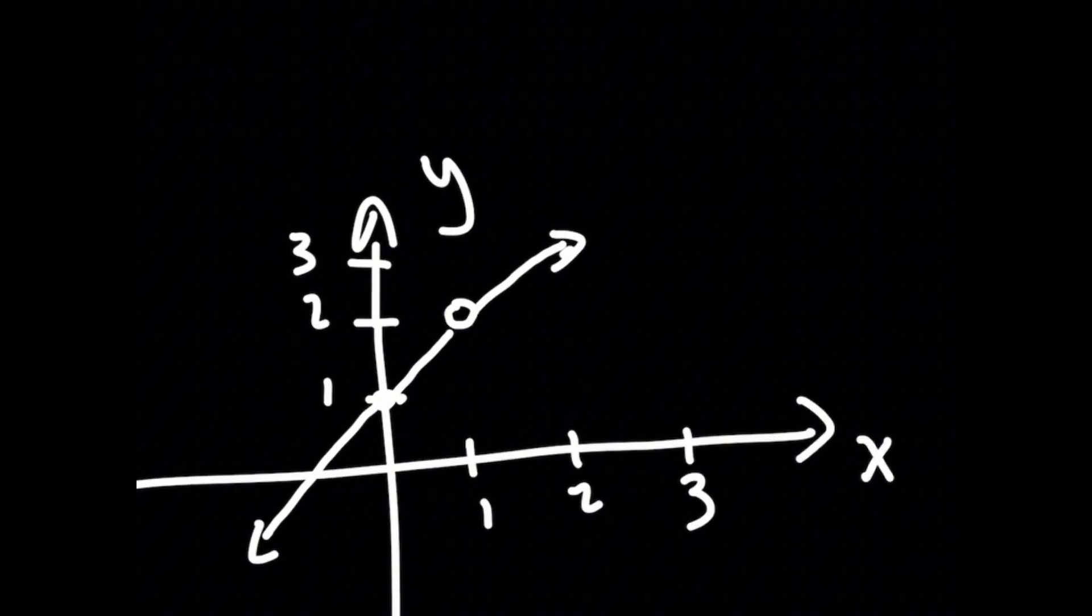So if you look at this graph by inspection, you can tell very easily that if I approach x equals 1 from the left or the right, the line basically approaches the value for y as y equals 2. So that means the limit as x approaches 1 of the function equals 2.